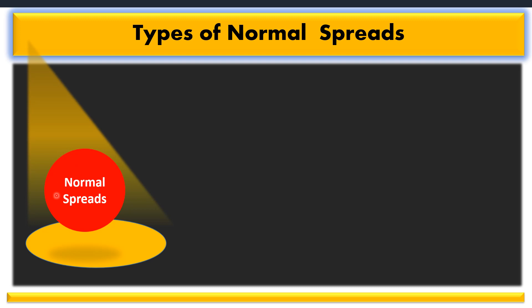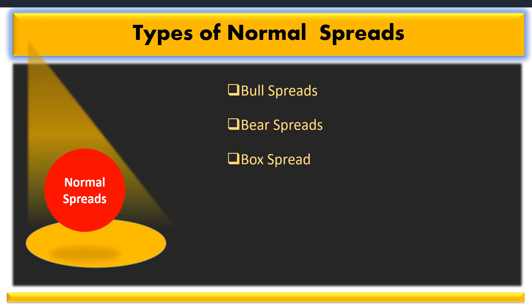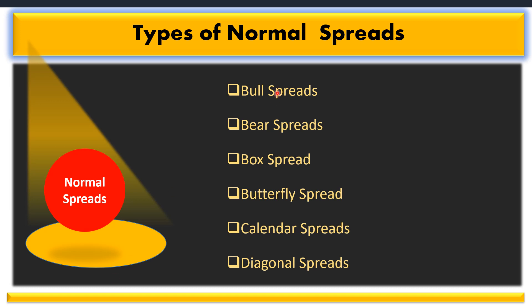So in normal spread, I will be discussing in detail the types of normal spread. Normal spread means you will make an option strategy either by call or by using put — you should not use call and put together for making the same strategy. So in normal spread, I will be discussing bull spread, bear spread, box spread, butterfly spread, calendar spread, and diagonal spread. I will be discussing all these spreads in separate videos, and I will make all these spreads with call and with put separately for your understanding.